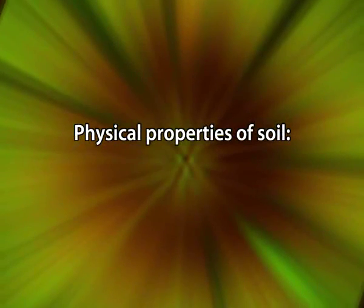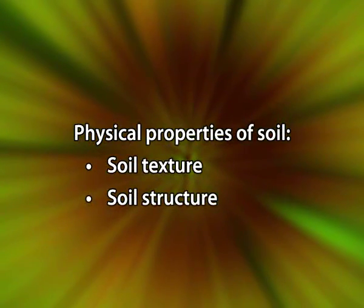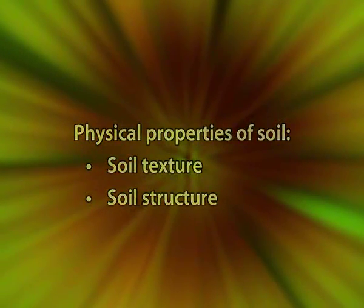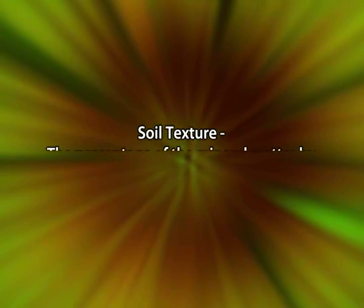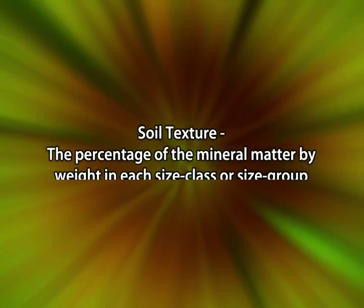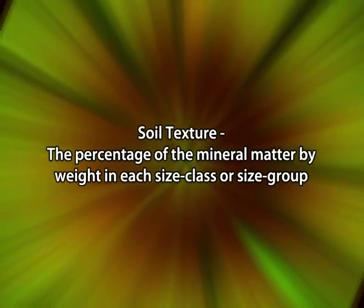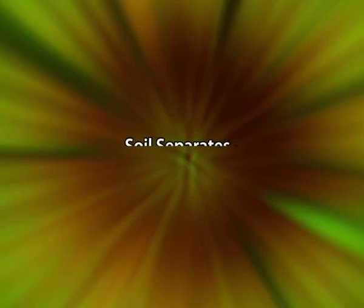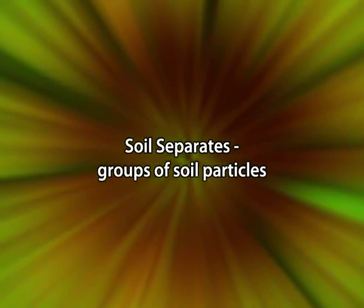Among the physical properties of soil, soil texture and soil structure are of fundamental importance. Soil texture is the percentage of the mineral matter by weight in each size class or size group, without considering their chemical composition and other properties. These groups of soil particles are known as soil separates.